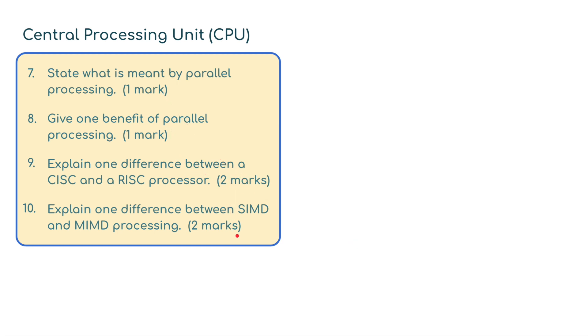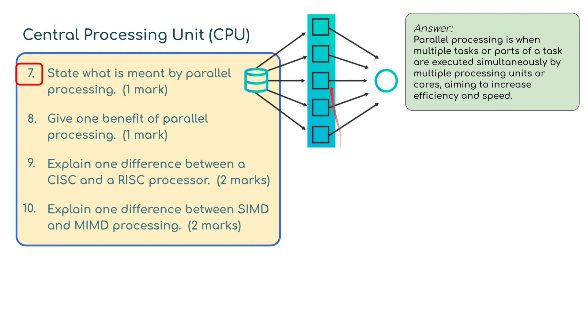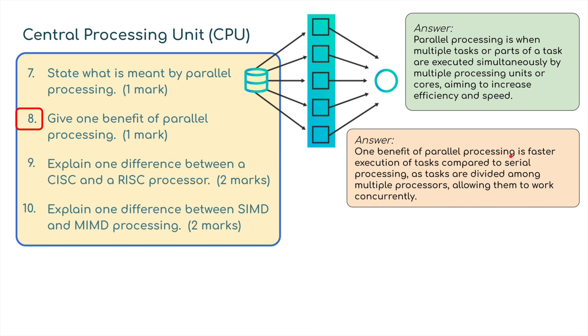State what is meant by parallel processing and give one benefit. Parallel processing is when multiple tasks or parts of a task are executed simultaneously by multiple processing units or cores, aiming to increase efficiency and speed. A processor with multiple cores can do parallel multitasking a lot quicker. One benefit of parallel processing is faster execution of tasks compared with serial processing, as tasks can be divided among multiple processors, allowing them to work concurrently.